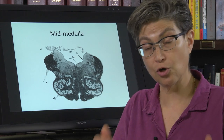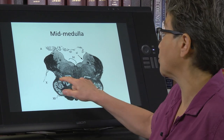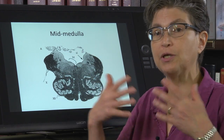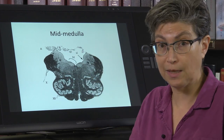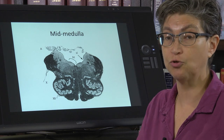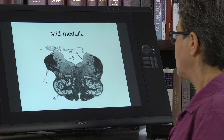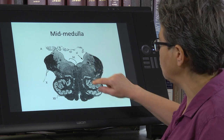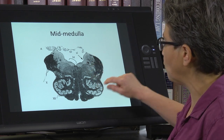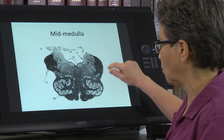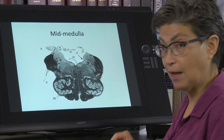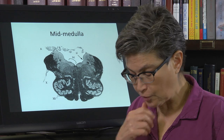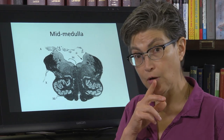Dysarthria and dysphagia both depend on function here. Ipsilateral lesioning produces an effect — you don't need bilateral lesioning to have dysphagia or dysarthria. You should start to think about what kind of symptoms will result from losing function here. We're going to go over that later when we talk about strokes.